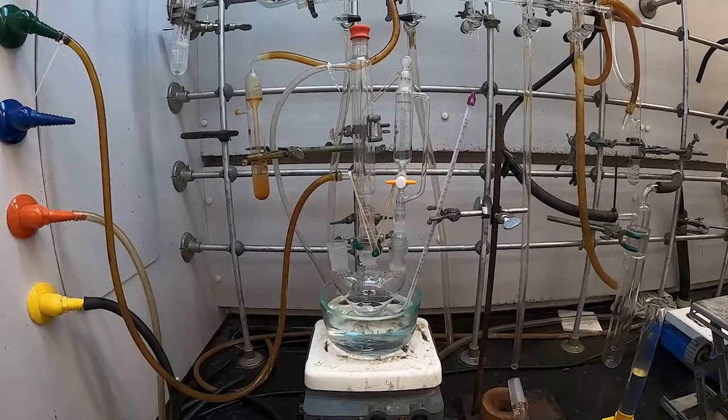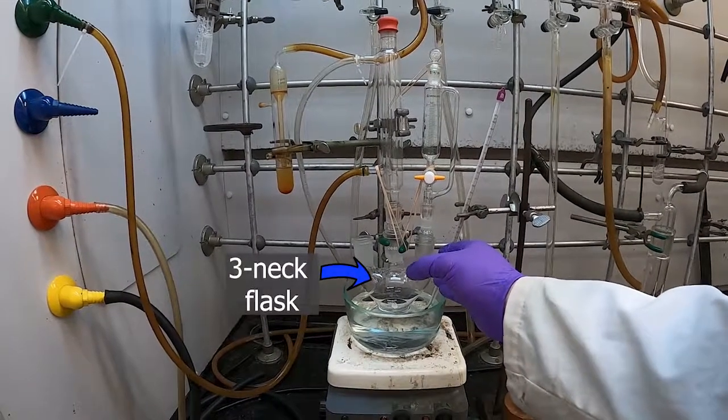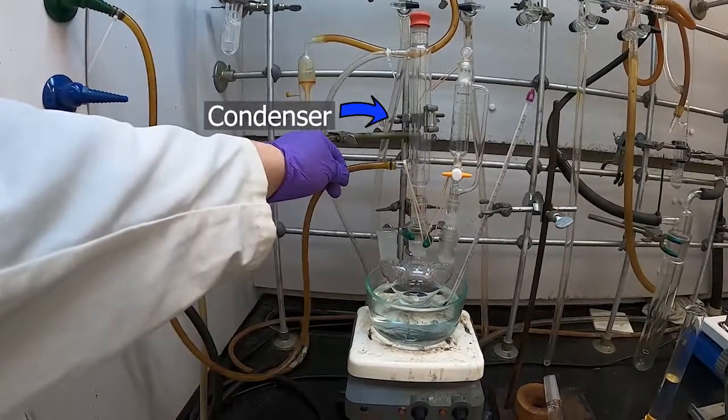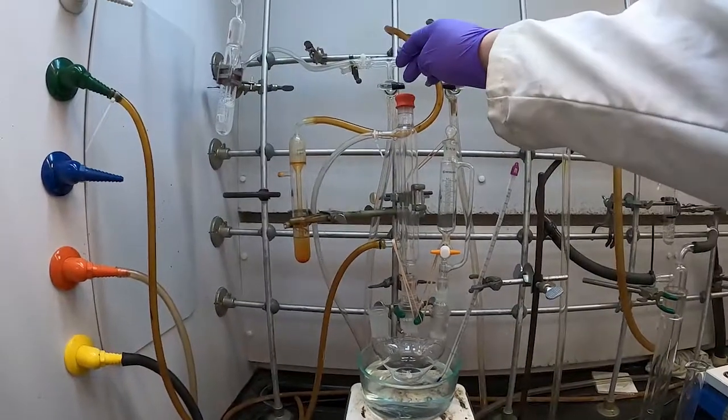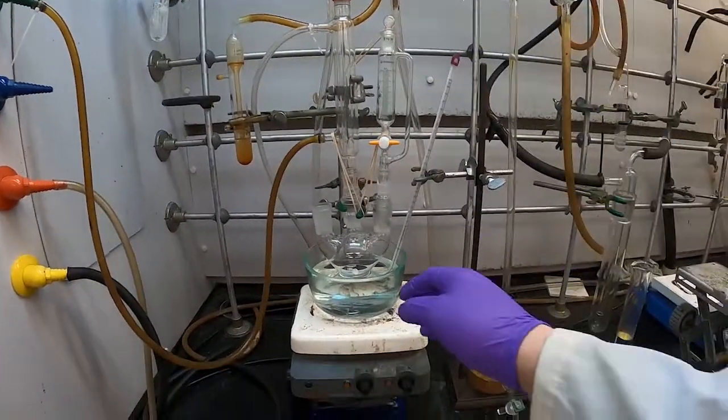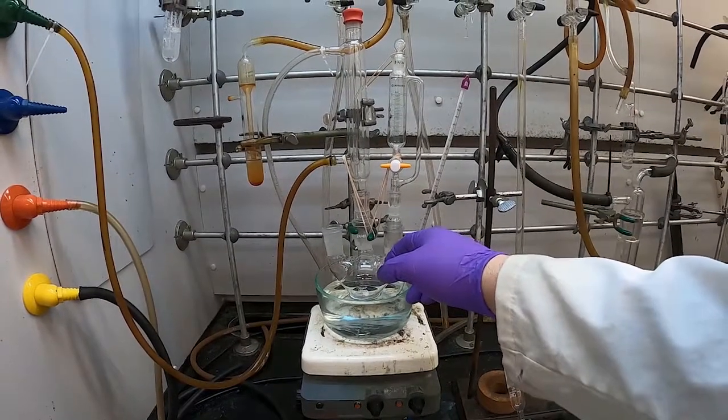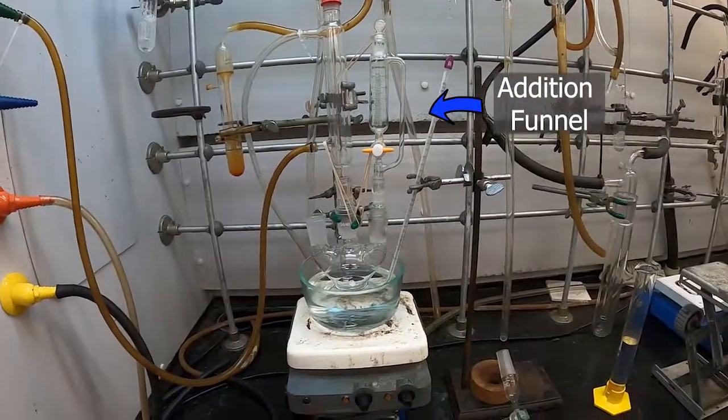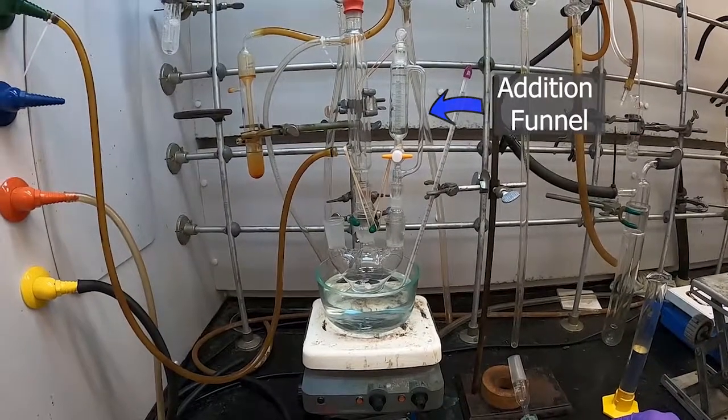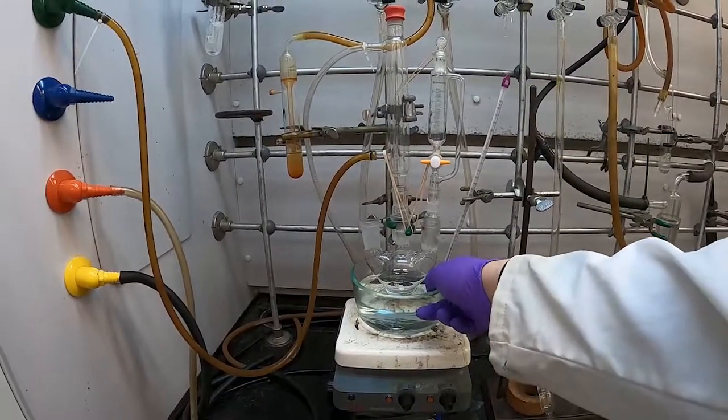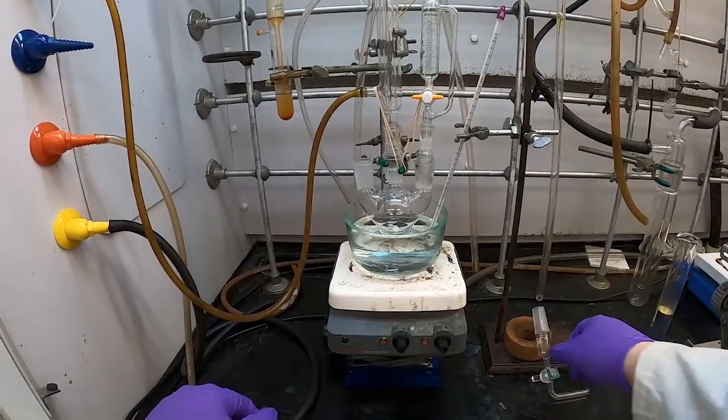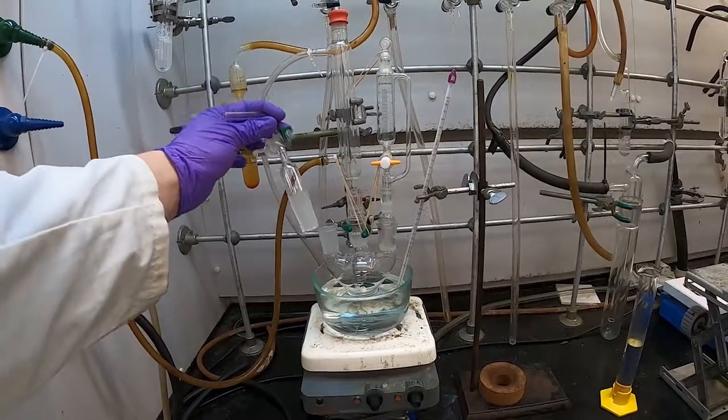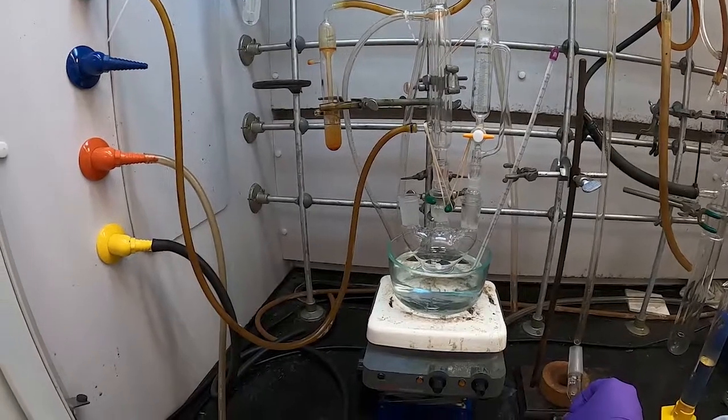So I've got here our apparatus set up. I've got a three neck round bottom flask. The center port here, I've got a condenser and the necessary adapters for that. I've got it hooked up to the water lines and those water lines are secured and the top of the condenser has a septum. On this right side arm of the flask, I've got an addition funnel that has a stopper in it. And then in our third neck, we'll have a gas adapter so that we can have a flow of nitrogen through our system.